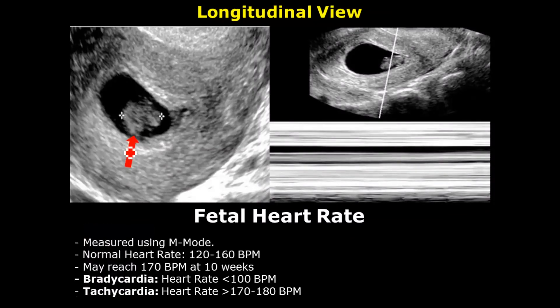Fetal heart rate can be measured using M-mode. The normal heart rate range is from 120 to 160 beats per minute and it may reach 170 beats per minute by 10 weeks. Fetal bradycardia occurs when the heart rate is below 100 beats per minute, and fetal tachycardia occurs when the heart rate exceeds 170 to 180 beats per minute. 170 is considered the borderline range for tachycardia.